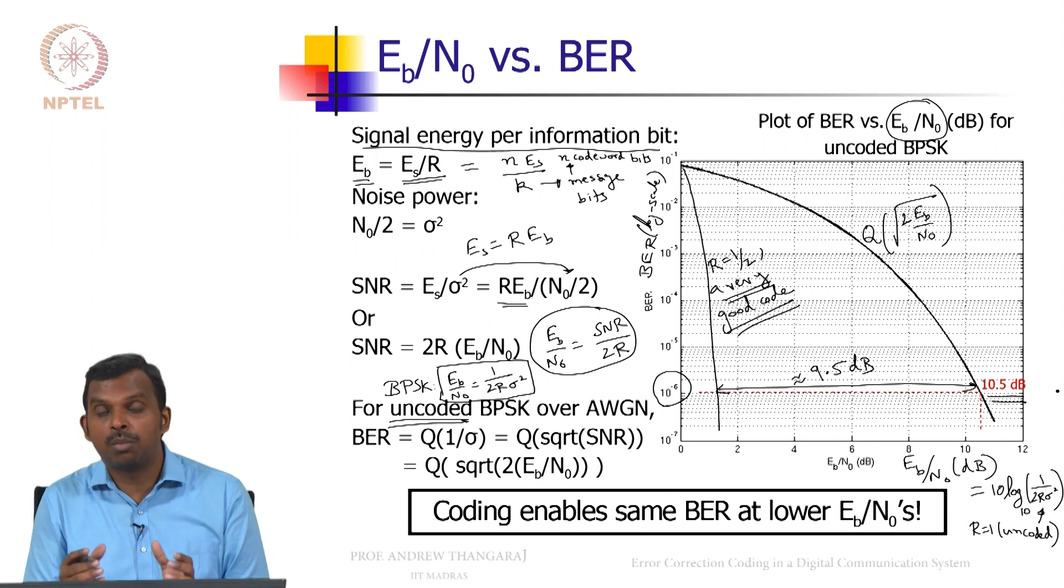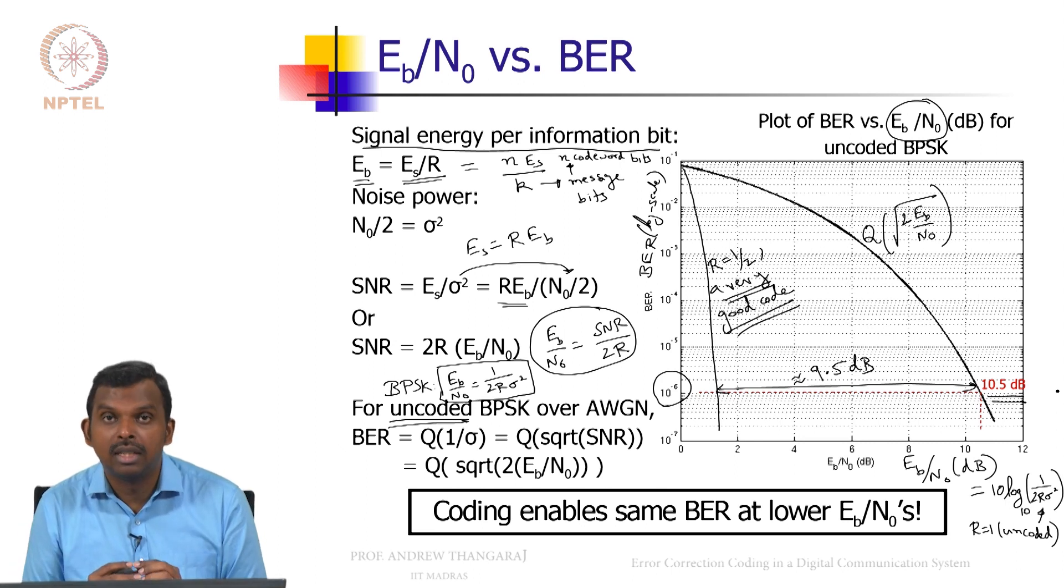So instead of having a signal power which is 10 times as much as the noise power, it is enough if you have a signal power which is just a little bit more than the noise power. Imagine the savings. Your battery will last that much longer. Things do not heat up that much. Everything is wonderful in this scenario.